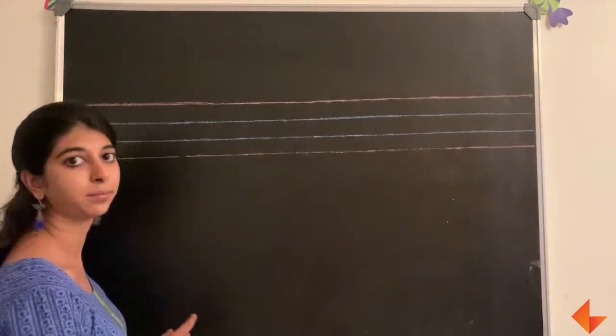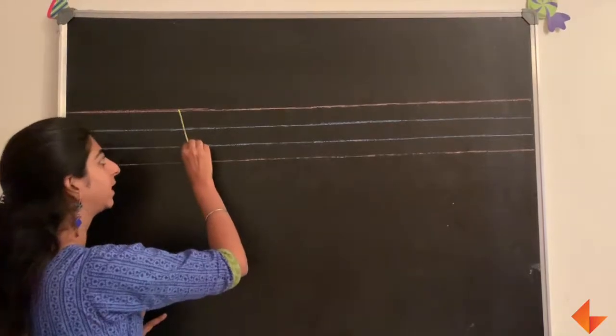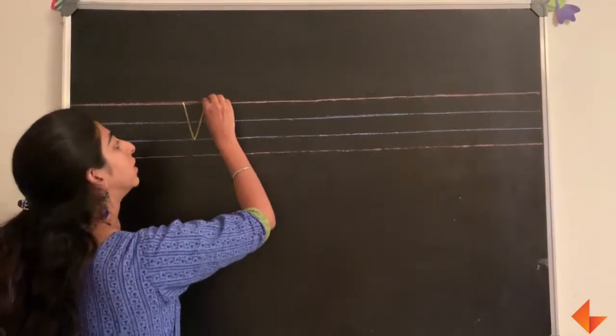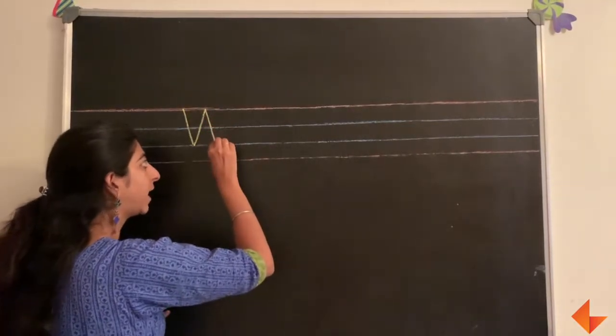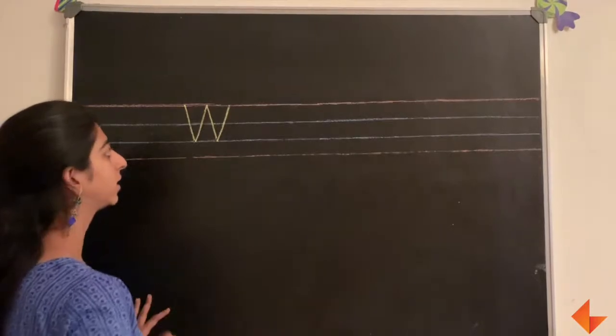This is how you write the letter W. Start from the top and draw a slanting line, draw another slanting line, bring a slanting line down and another slanting line.